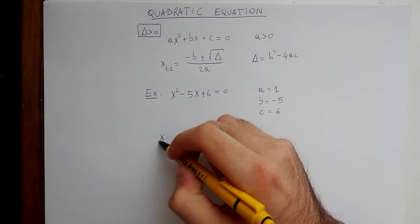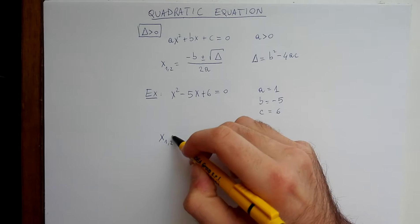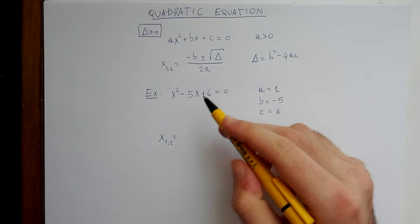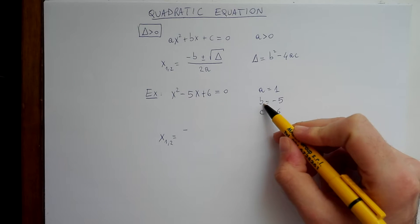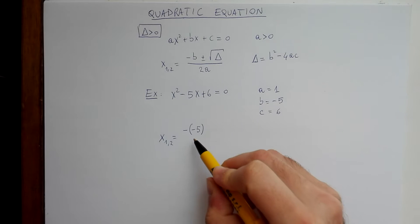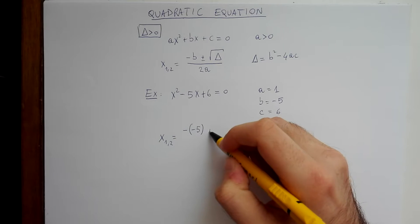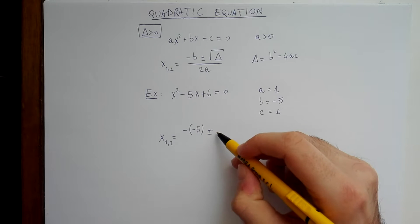So let's use the formula x1,2. We have minus b, but b is minus 5, so minus minus 5. Take care of this thing because usually this is a mistake that people do, plus or minus square root of delta.